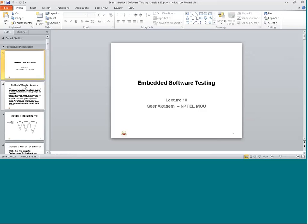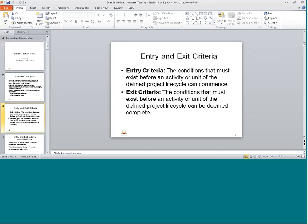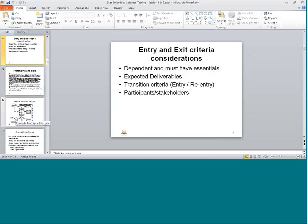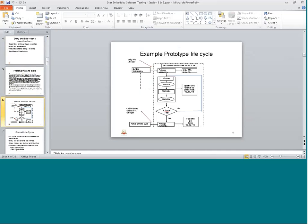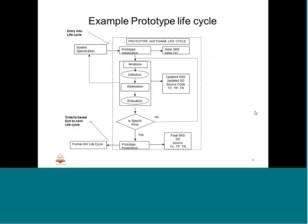This is Lecture 10, a continuation of embedded development life cycle and testing life cycle, covering different types of life cycles like V model, multiple V model, and after V model. In the earlier session we studied about the V life cycle, N3 and N5 entry/exit criteria, two types of prototyping life cycle and formal life cycle, along with an example of a product life cycle.